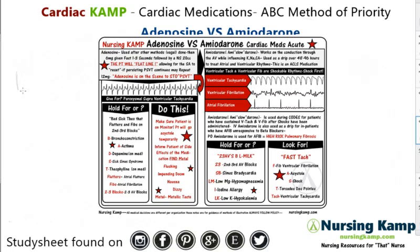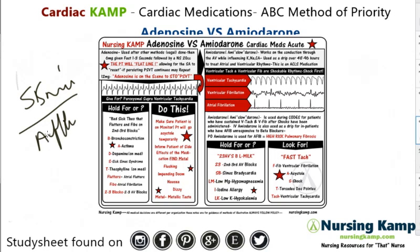Patients receiving adenosine may have a flushing or impending doom feeling, nausea, dizziness, and a metallic taste in their mouth. We question this medication with patients who have sick sinus syndrome or atrial flutter, because in flutter the SA node isn't working correctly, whereas in SVT it is working — it's just originating above the ventricles.